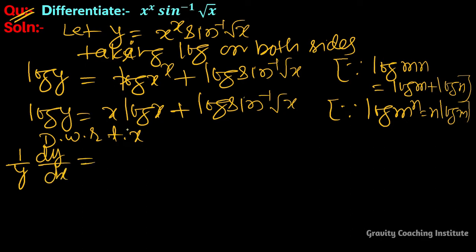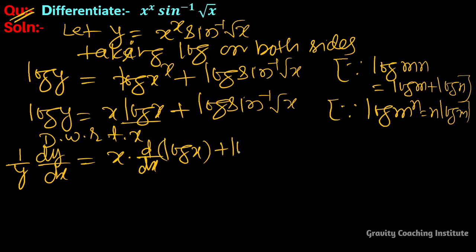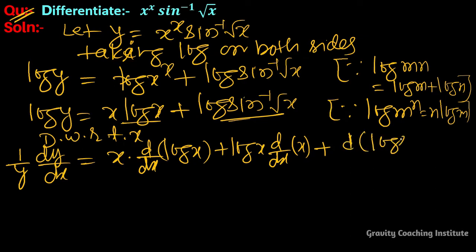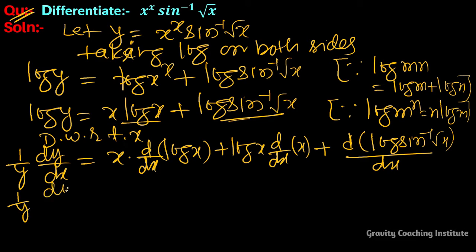Now differentiate with respect to x. So 1 upon y · dy/dx equal to — here we use the product rule — x into differentiation of log x plus log x into differentiation of x, and here we use chain rule for differentiation of log sine inverse root x.